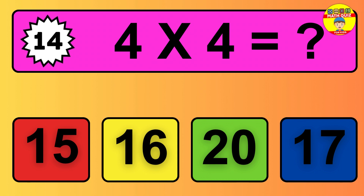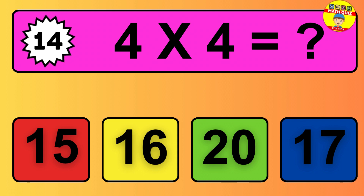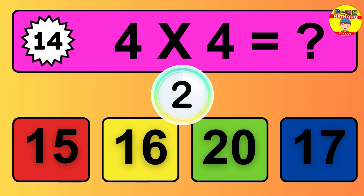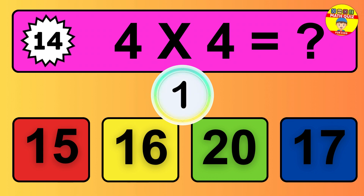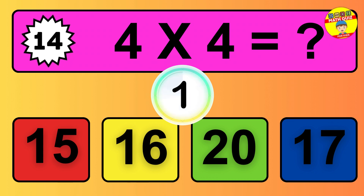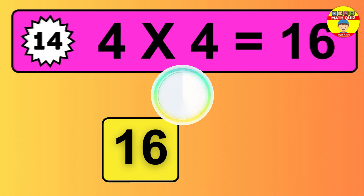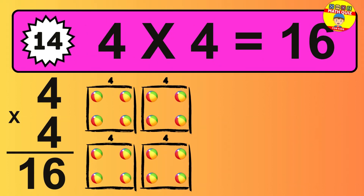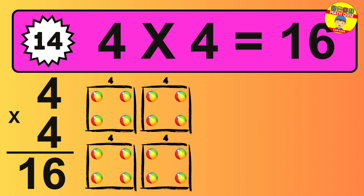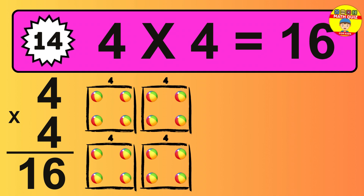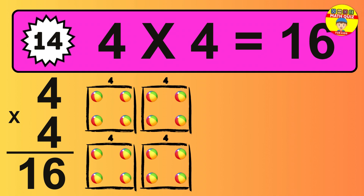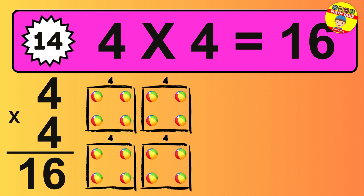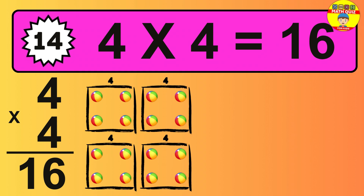Question 14. 4 times 4 equals what? The answer is 4 times 4 is 16. To calculate, we have 4 groups with 4 balls each one. So how many balls do we have? 16 balls.